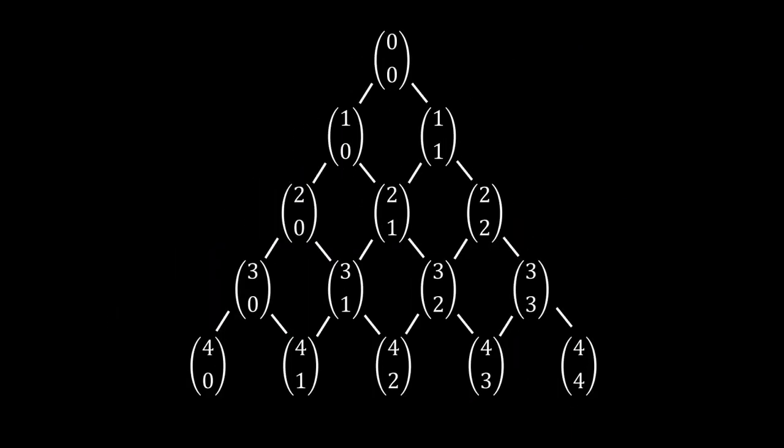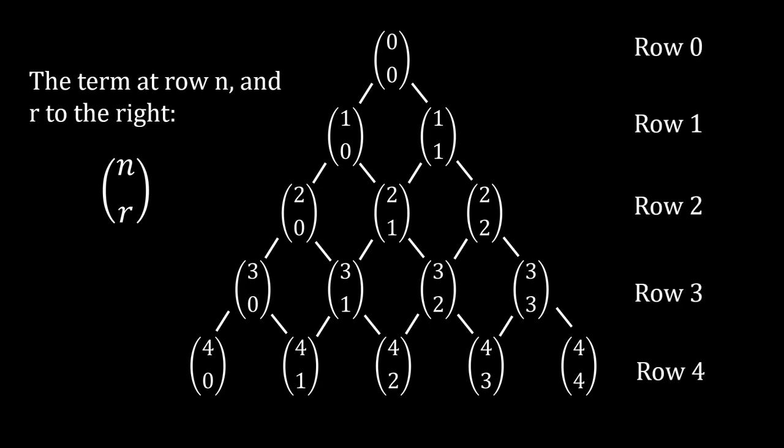In general, the term at row n and r to the right of the left diagonal is given by n choose r. And by convention, we label the first row row 0, the second row row 1, and so on.